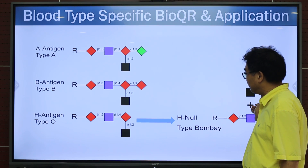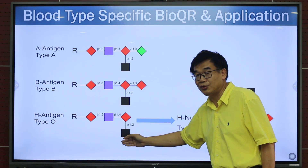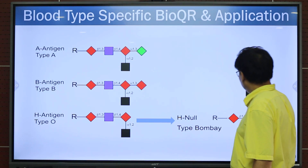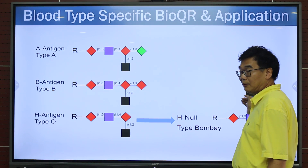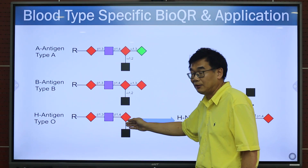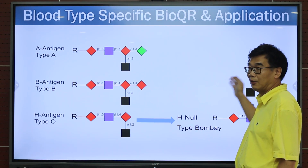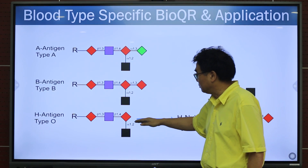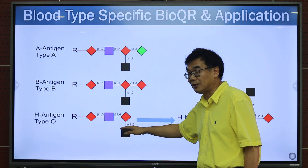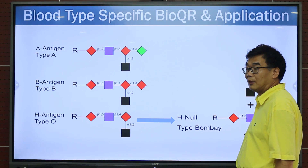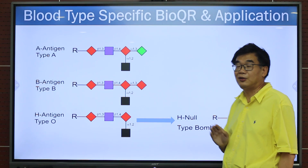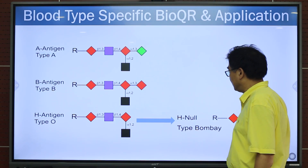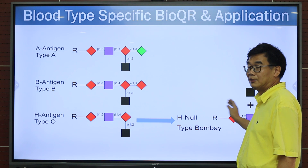Now, because we understand the situation, the question is: can we make the Bombay blood from O-type blood? We try this. We isolate an enzyme and treat the O-type blood cells, and we can make the Bombay blood type. We can finish this in an hour. This work is currently in the early development stage.